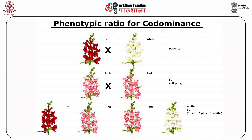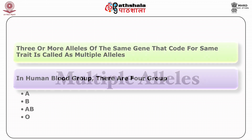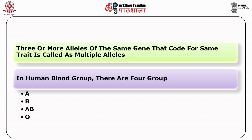These ratios are the same as those for incomplete dominance. Note that in reality such cases should not be said to exhibit dominance at all. Last is multiple alleles. When there are 3 or more alleles of the same gene that code for the same trait, they are called multiple alleles. For example, in human blood there are 4 groups: A, B, AB, and O.